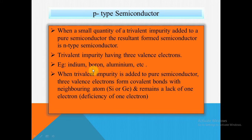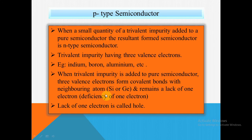When a trivalent impurity is added to a pure semiconductor, three electrons form covalent bonds with neighboring atoms, and the remaining bond has a lack of one electron — that means a deficiency of one electron — which creates a hole. Lack of one electron creates a hole, which acts as a positive charge.